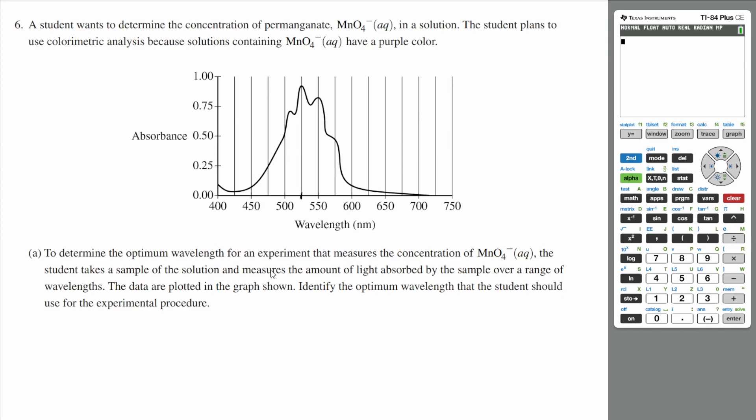The student takes a sample of the solution and measures the amount of light absorbed by the sample over a range of wavelengths. The data are plotted in the graph shown. Identify the optimum wavelength that the student should use for the experimental procedure.